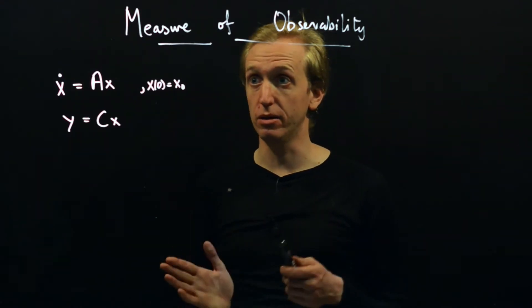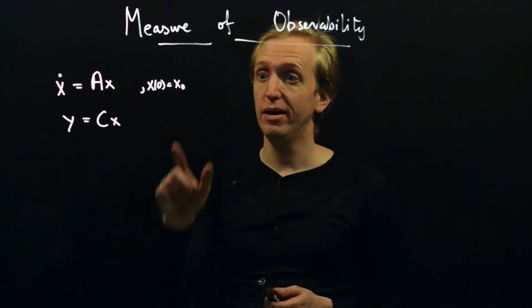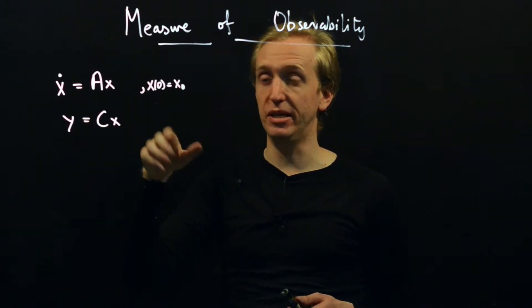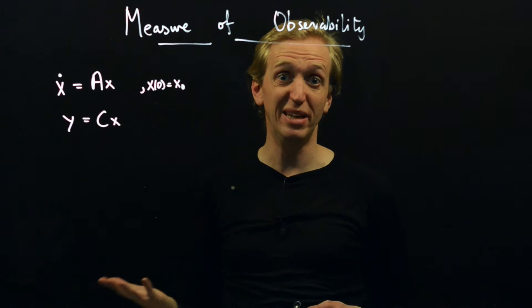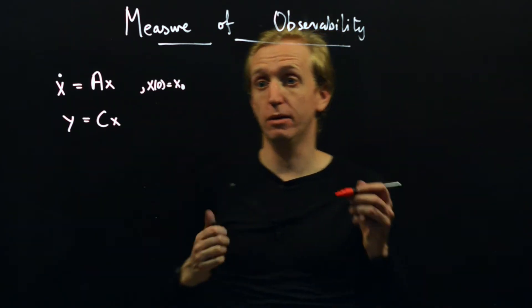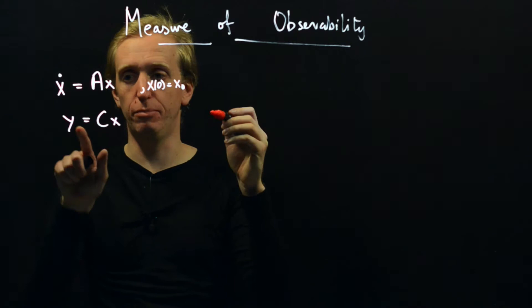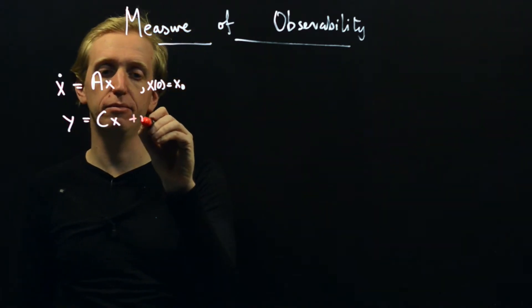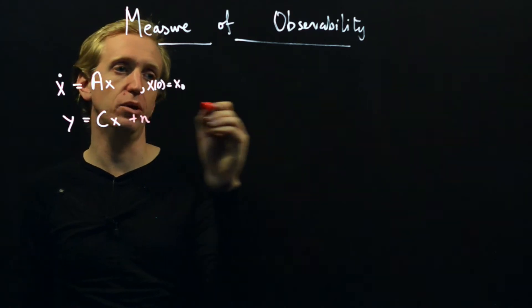A system is observable if, given any output, the initial condition that caused it can be uniquely determined. But we don't have perfect measurements y. We would actually have measurements y subject to some noise.